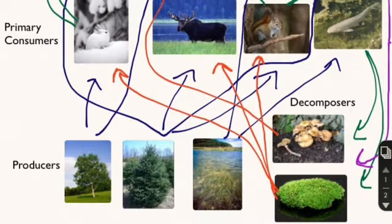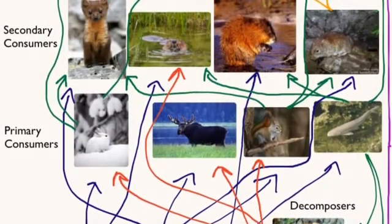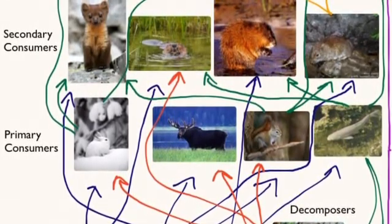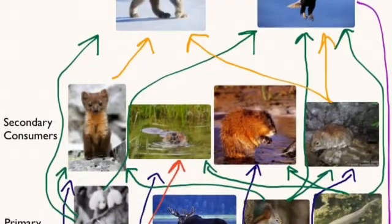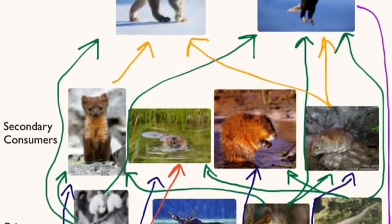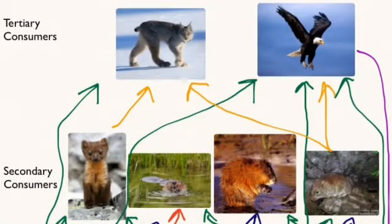A food web of the taiga ecosystem shows on the very bottom primary producers, which include plants and algae, and also decomposers, which include fungus. The second level shows primary consumers, which include the snowshoe hare, the moose, the American red squirrel, and the carp. The third level shows secondary consumers, which include martens, beavers, muskrats, and voles. The fourth and final level consists of tertiary consumers, which include the Canadian lynx and the bald eagle.